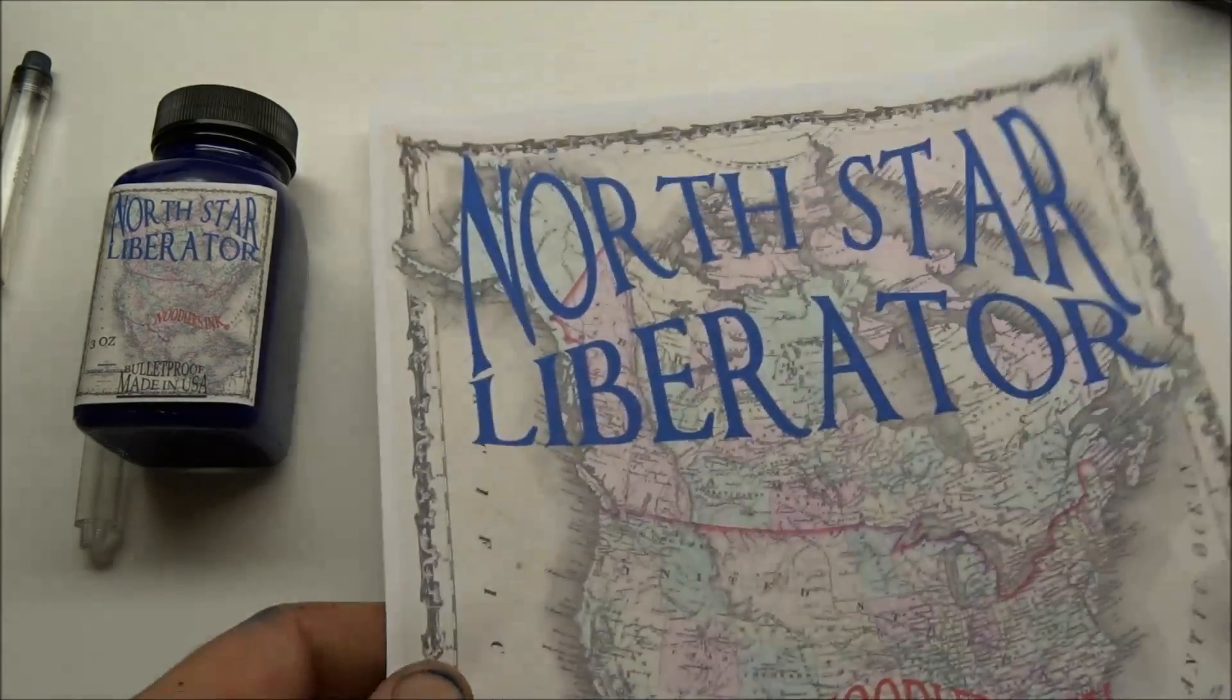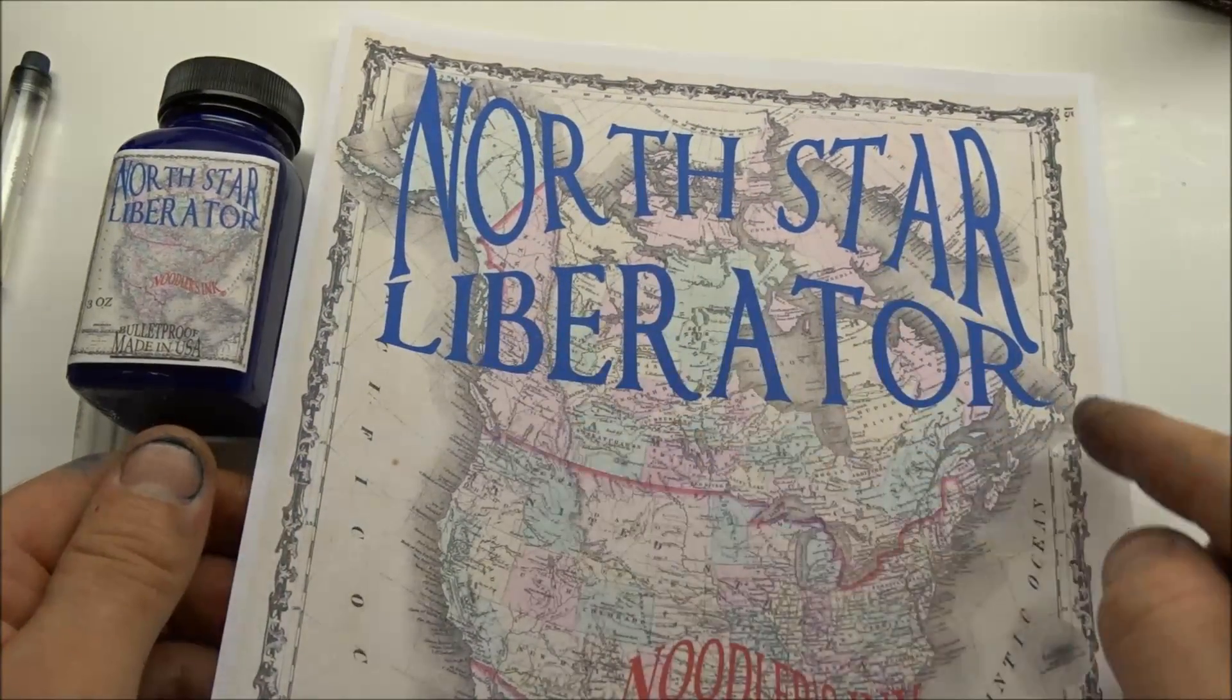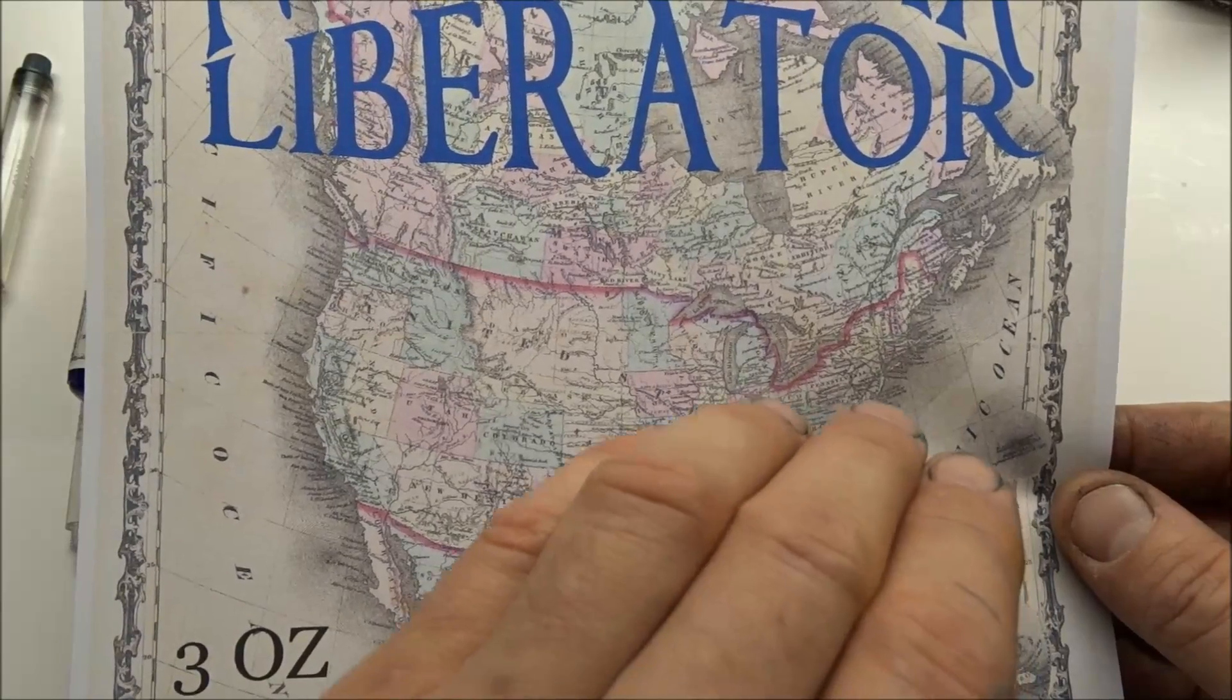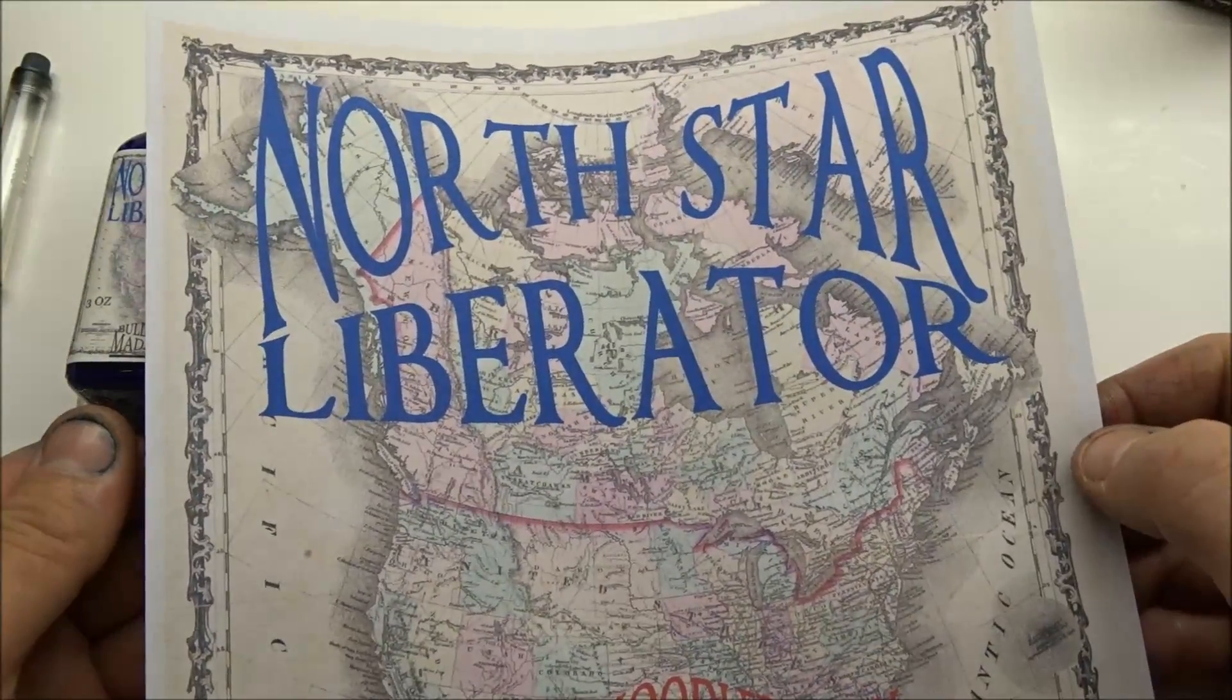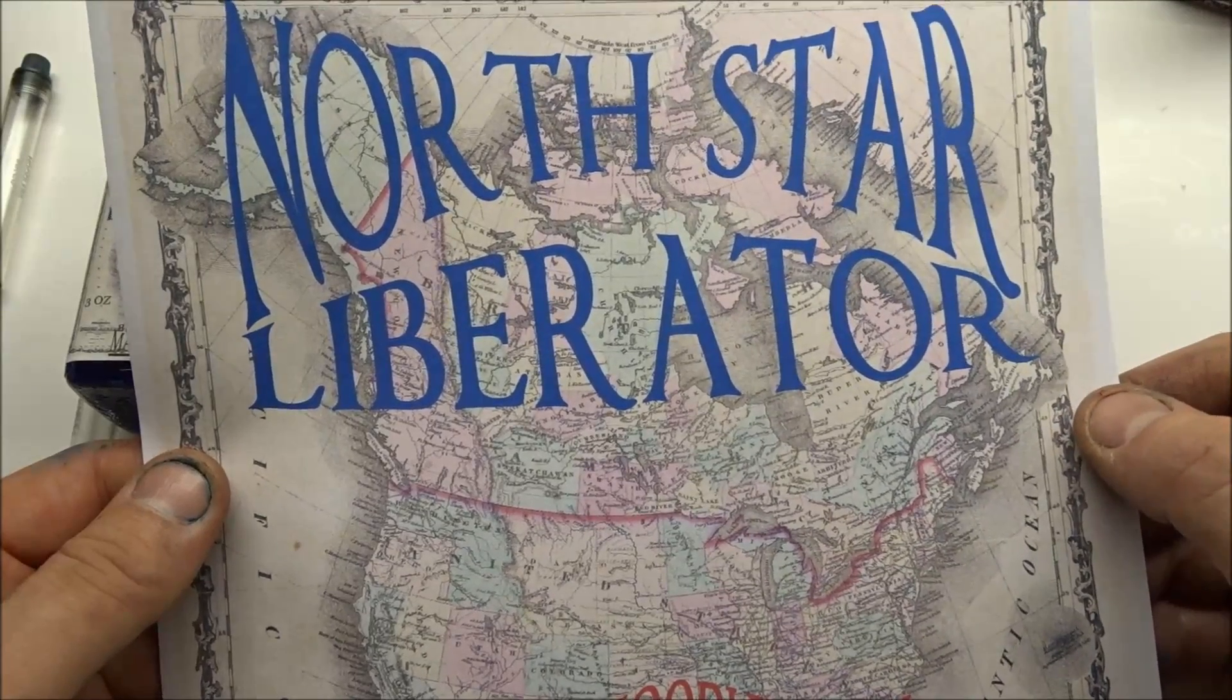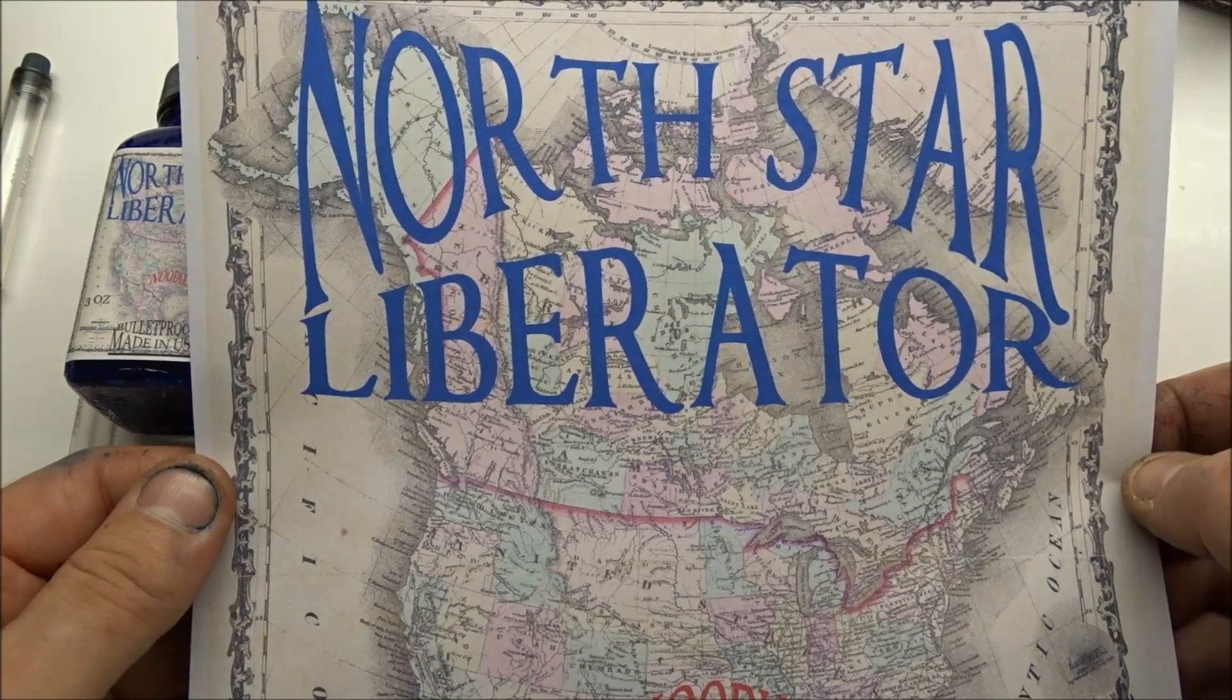The label itself is a map from the era. Alaska is still part of Russia, this is still part of Britain. The whole goal being to go from slavery to freedom. The North Star was the guide for Harriet Tubman and it then became named as the title of Frederick Douglass's paper. The Liberator, as some of you may know, that was the first abolitionist paper and it was founded by a native of Massachusetts, William Lloyd Garrison. It was published for quite a while in the Boston area.